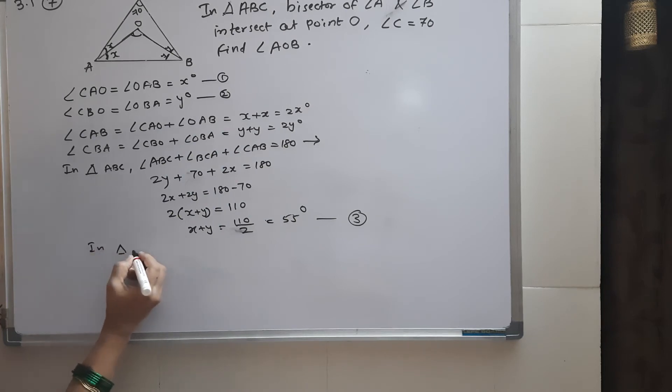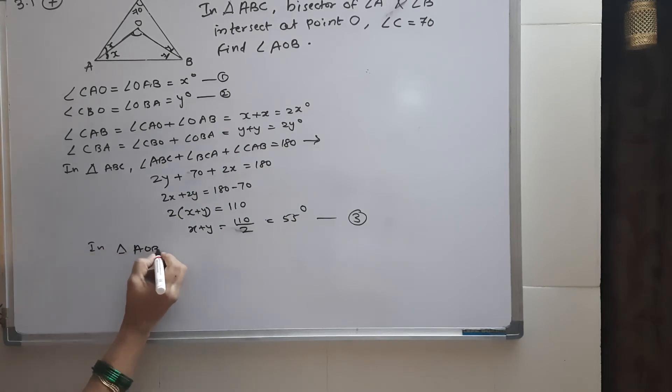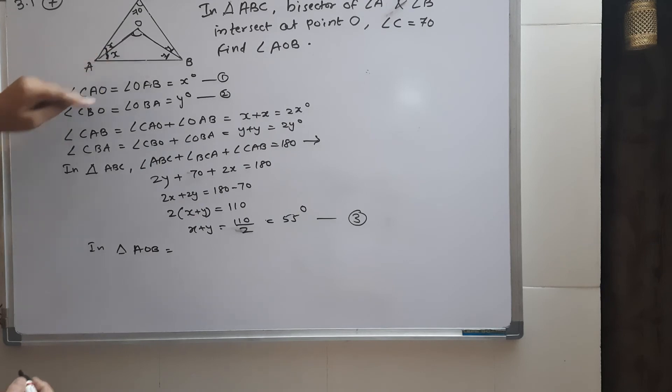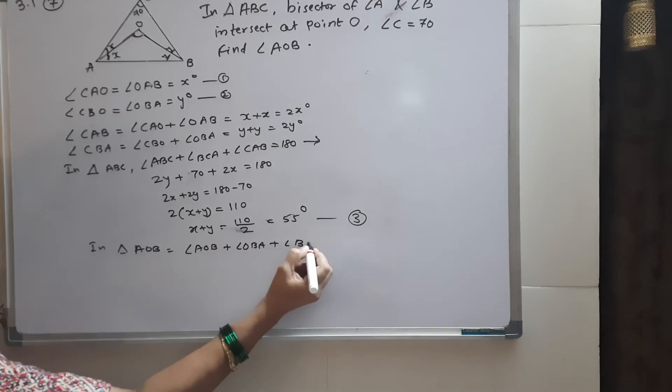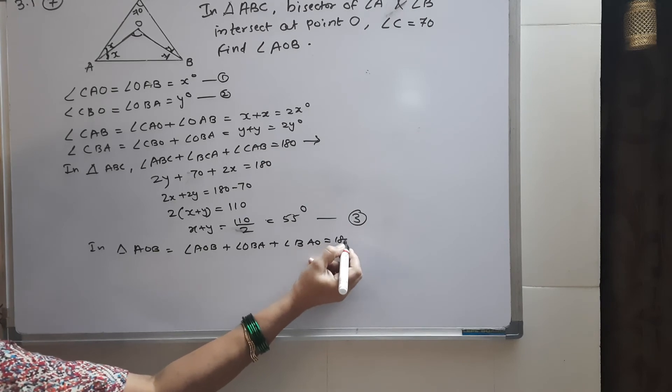Now in triangle AOB, we need to find angle AOB. Angle AOB plus angle OBA plus angle BAO equals 180.